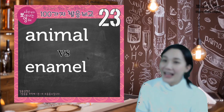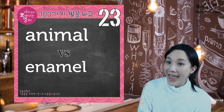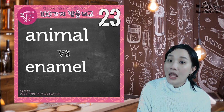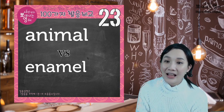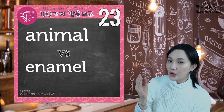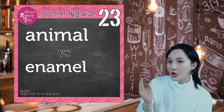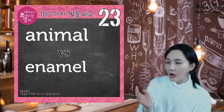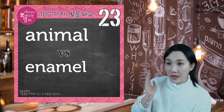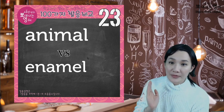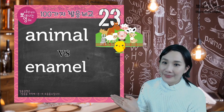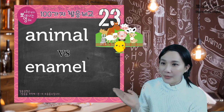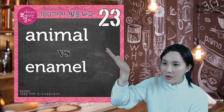A, N, M — Animal. The N in the middle can be treated like a Shure (neutral/schwa) sound. Think of it as treating that part as pink. Animal, animal, animal, animal, animal, animal.